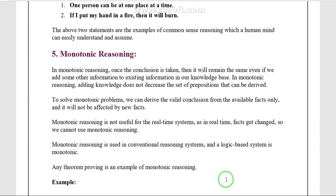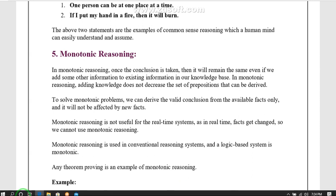That type of reasoning is called monotonic reasoning. Adding knowledge does not reduce the set of propositions that can be derived. When we add a second statement — Rani helps Rama to get placed in Sintel — it does not reduce the existing conclusions. All facts are already present to solve the problem.